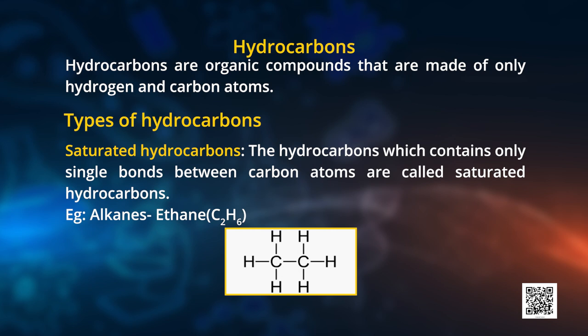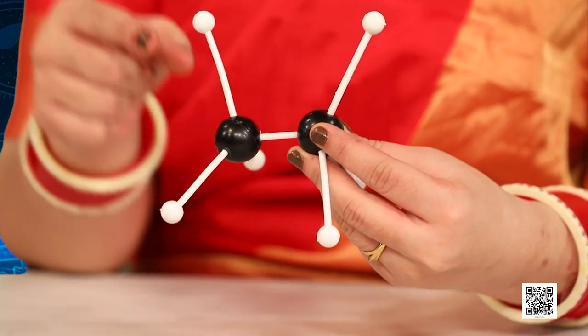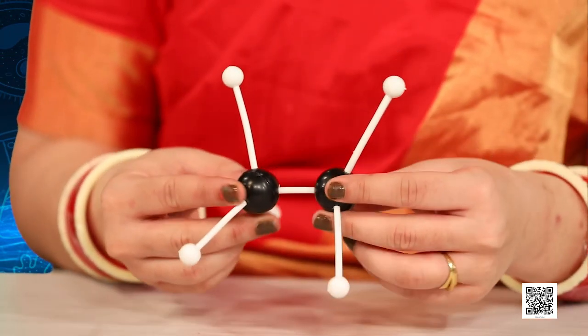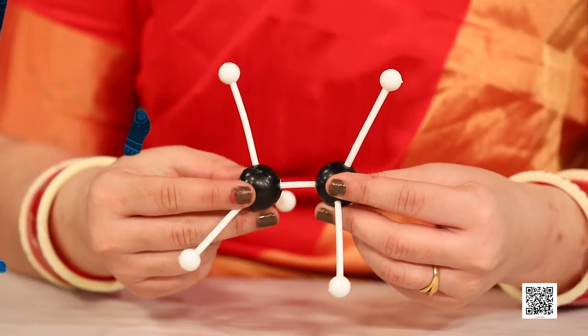Hydrocarbons are of two types broadly, as you can see on the screen. The first type is saturated hydrocarbons. These hydrocarbons contain only single bonds between carbon atoms. As you can see in the given structure, the black balls represent carbon and the white balls represent hydrogen, and in between two carbons there is a single bond.